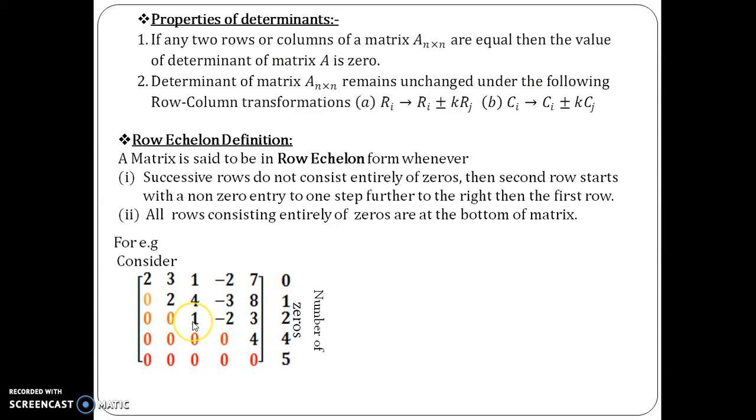Now, some important remarks. Given any matrix, when you are asked to convert it into row echelon form, we are only supposed to use row transformations. So we obtain the row echelon form of a given matrix only by using row transformations. No other transformations are allowed.